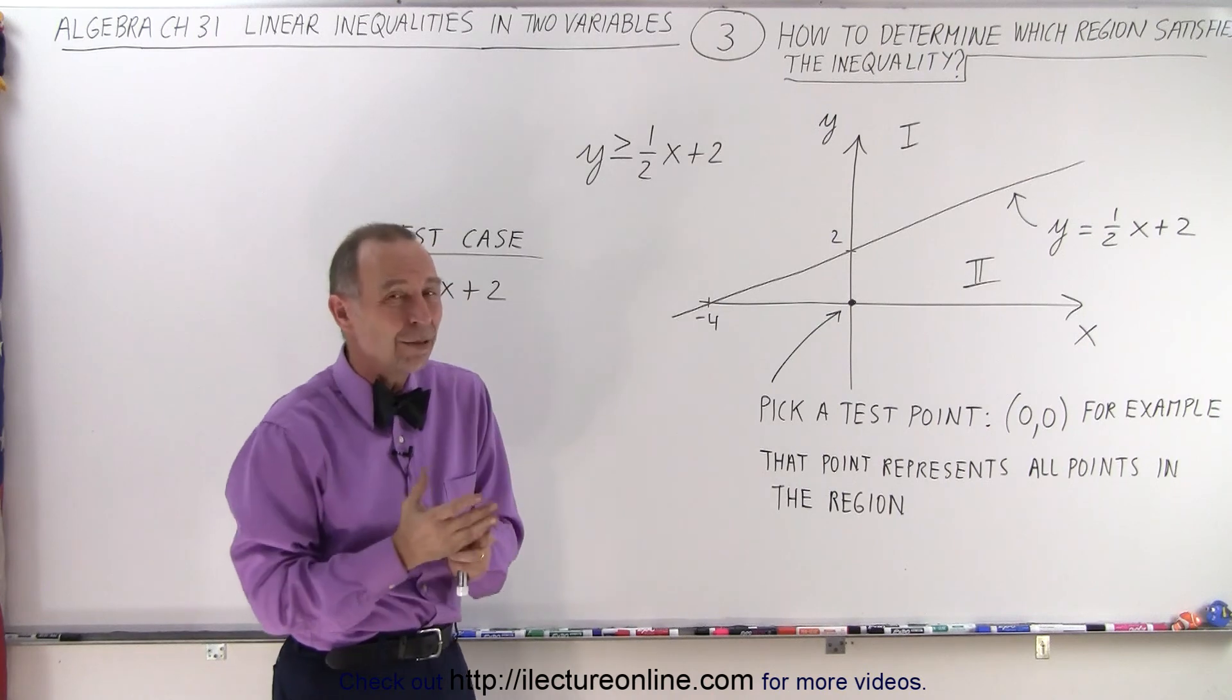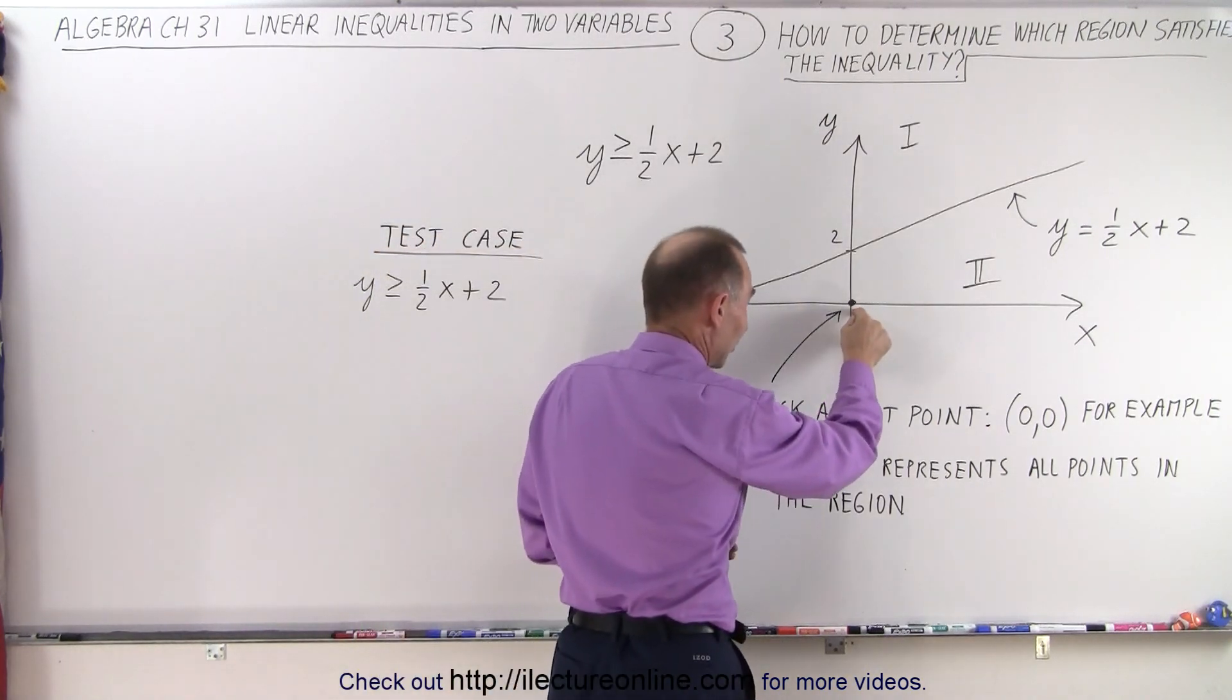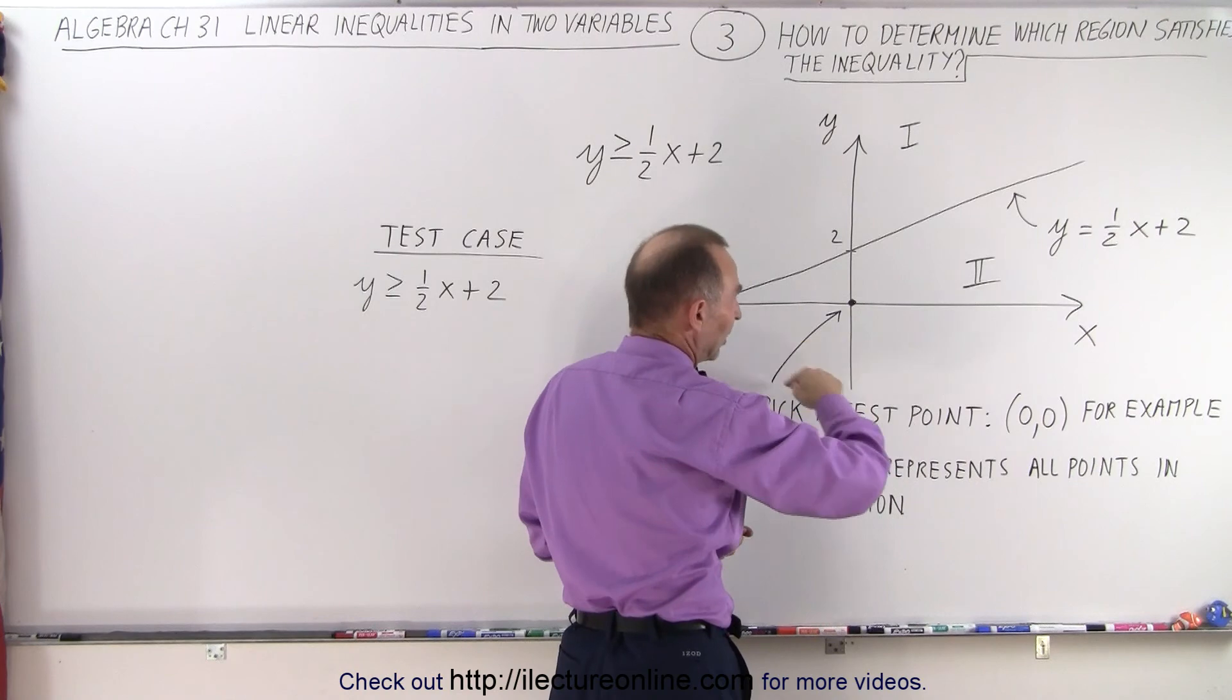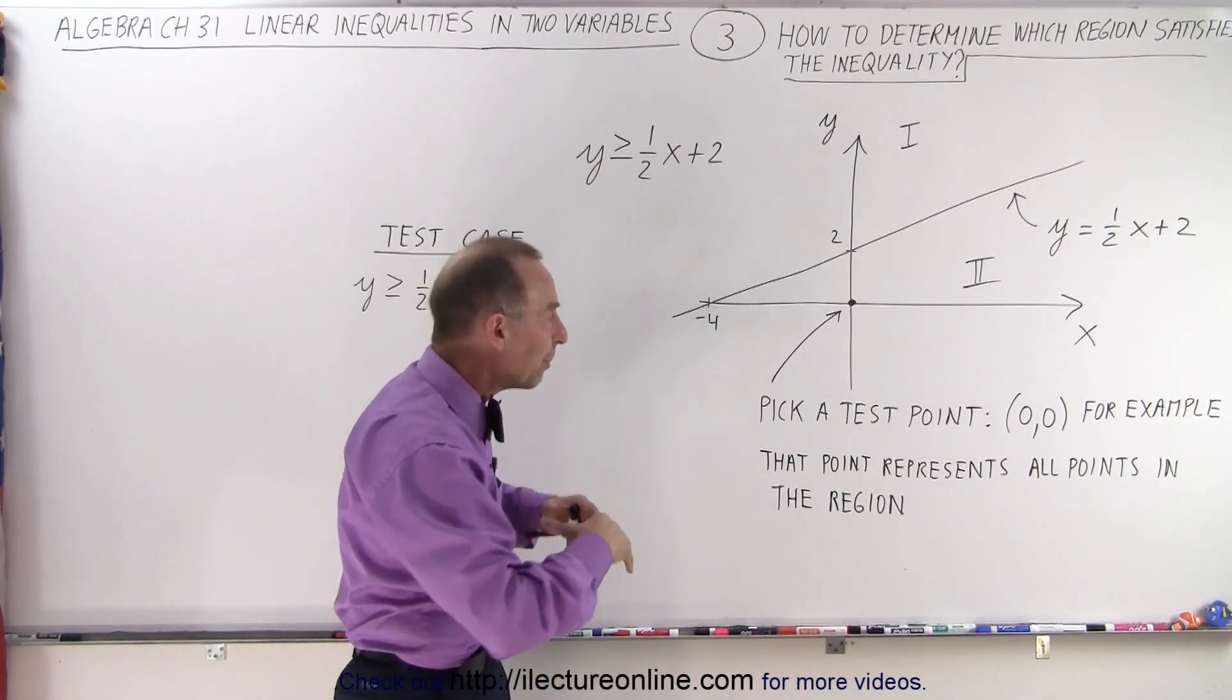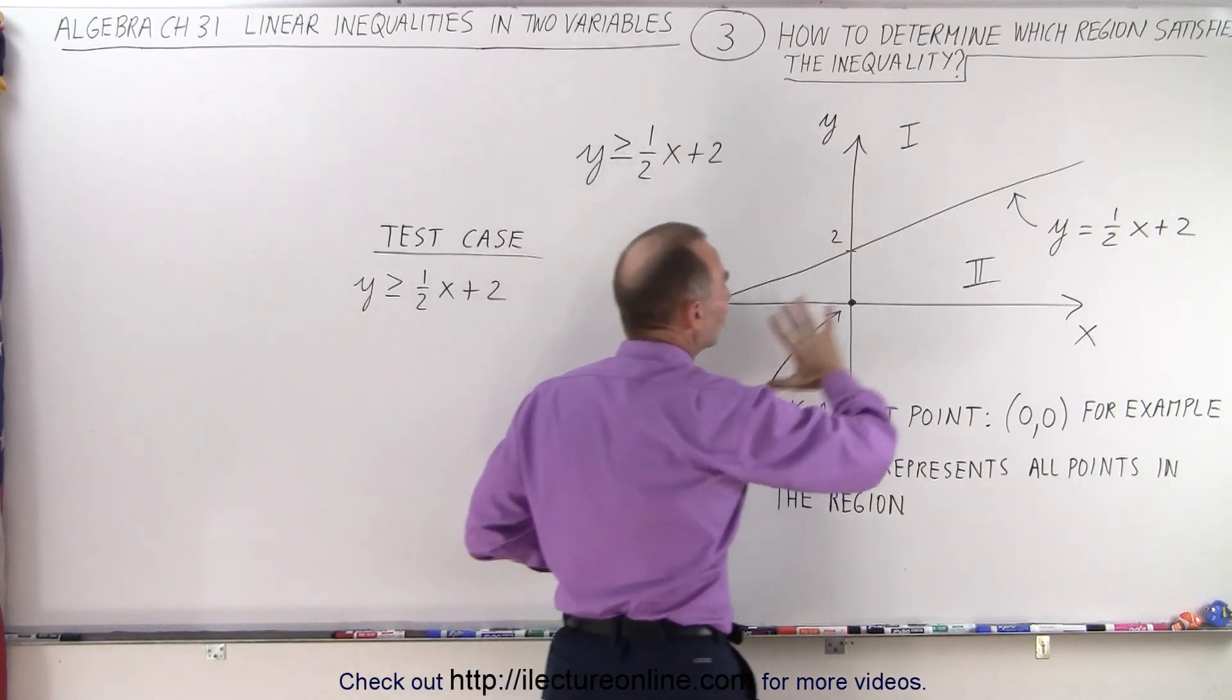I always like to pick an easy point, and of course the easiest point is (0,0), the origin, which clearly lies in region 2 here. That point is a representative for all the points in that region.